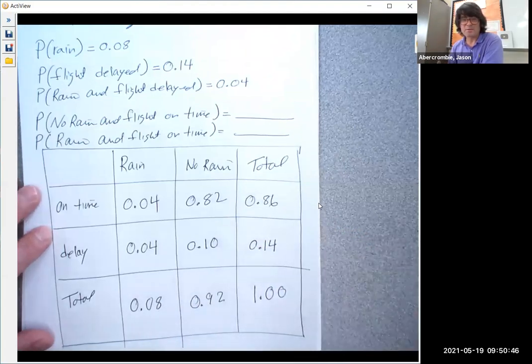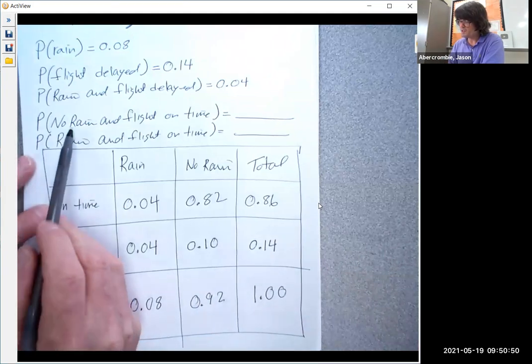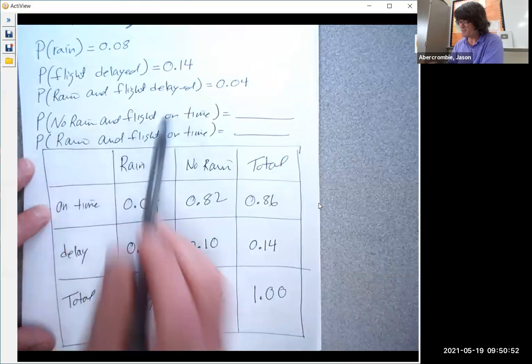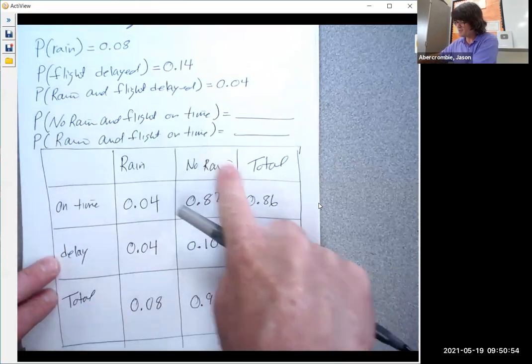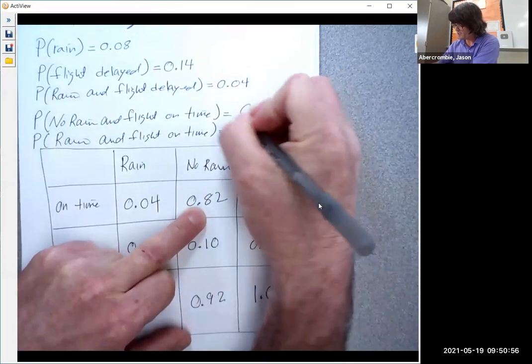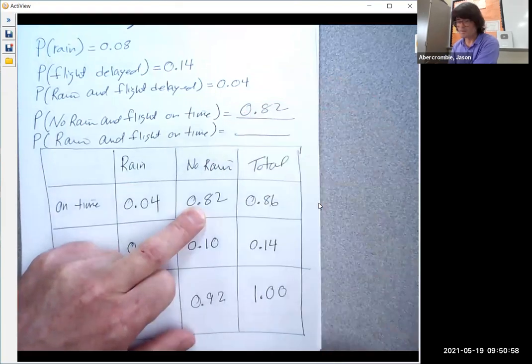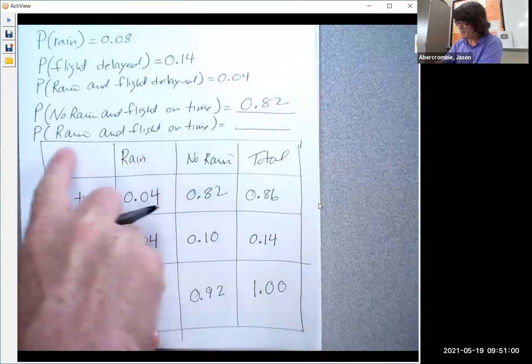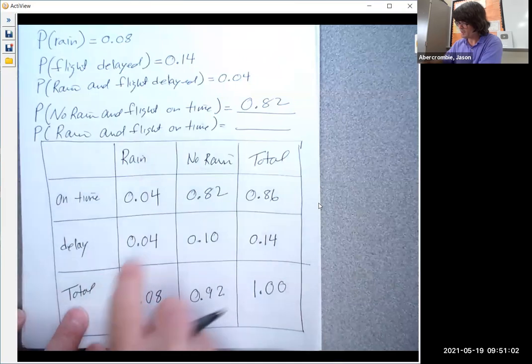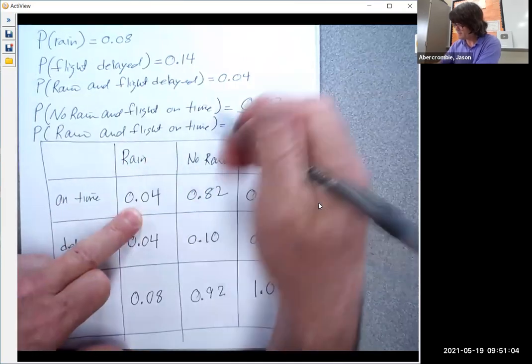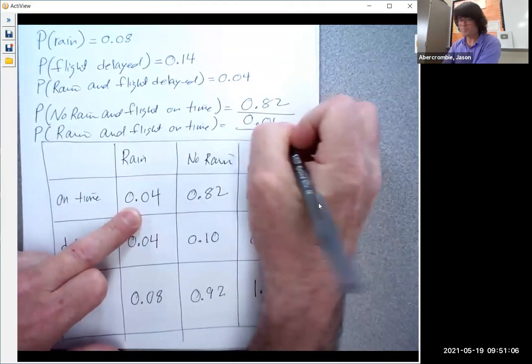Once you have your two-way table, you can answer any question you want practically. What's the chance there's no rain and the flight is on time? Well, here's no rain. Here's on time. That's an 82% chance. What about rain and flight on time? Here's rain and on time. It's a 4% chance.